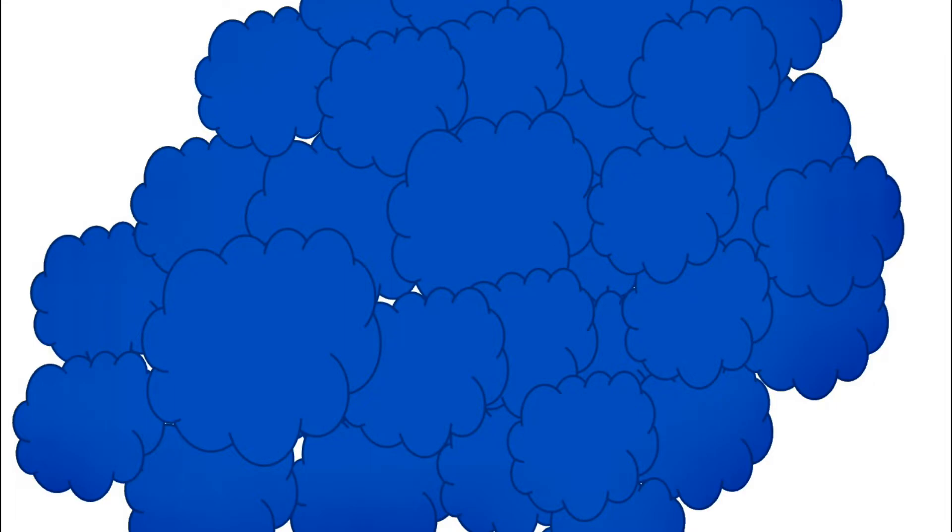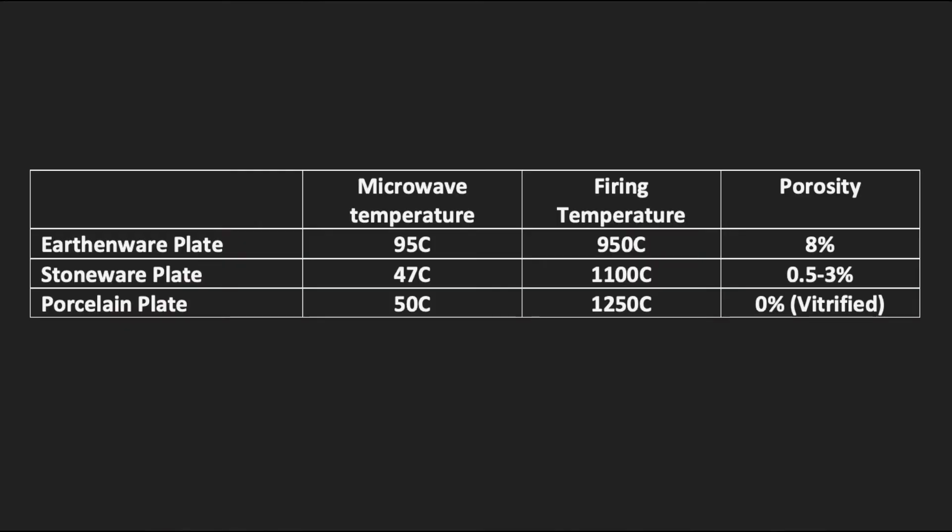The stoneware and the porcelain, however — their particles when they're fired are fired at a much higher temperature and they close up completely, so there's virtually no space between these particles. So unlike the earthenware, which acts like a sponge, they can't soak anything up. What happened in this testing was that we soaked the plates for an hour as required by the test, and the earthenware soaked up water. Then when we microwaved it, we were actually microwaving and heating that water — hence we got to 95 degrees centigrade because effectively we're boiling the water within the ceramic that it had absorbed. Whereas with the porcelain and stoneware, there's no water in there; it's only ceramic, and therefore there's nothing to heat up in the same way.